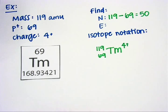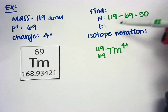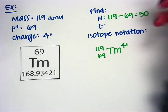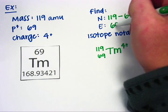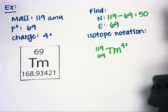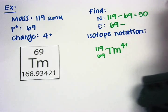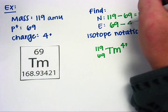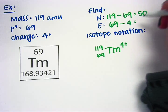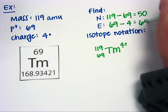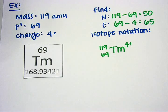Since my charge here is +4, that means I have 4 extra protons. When I go to find my number of electrons, I have 69. And since I have 4 extra protons, that means I need to subtract. 69 minus 4 gives me 65 electrons. And I finish this problem.